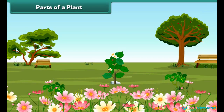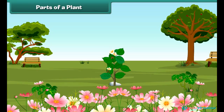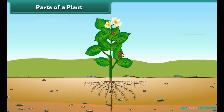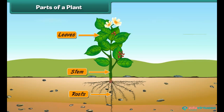Parts of a plant. Plants make our surrounding green. A plant is made up of a number of parts: roots, stem, leaves, flowers, and fruits.